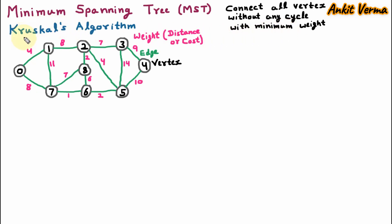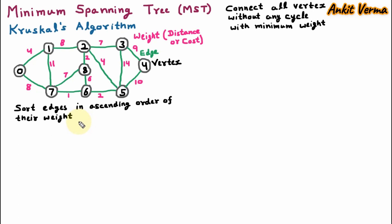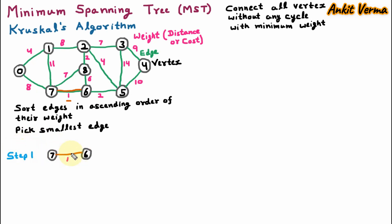Now we are applying the Kruskal algorithm on this graph. Kruskal's algorithm says to sort all the edges into ascending order of their weight and afterward pick the smallest edge. Here in the graph we can see that the minimum weight of an edge is 1. So this edge is selected between vertices 7 and 6. In step 1 we have taken the minimum weighted edge.